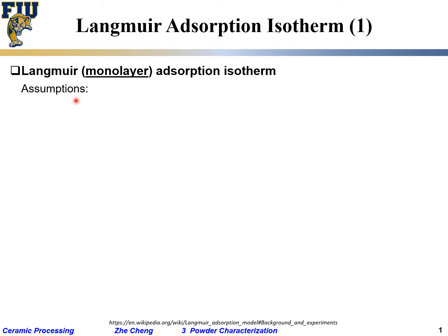To get this model, you have to make assumptions. The first assumption is a simple adsorption reaction — even for adsorption we can write it as a chemical reaction, except S is for a so-called surface vacant site. S is not really a chemical species but a site where gas can come to the surface. You need an empty surface site. Ag is for your adsorbate — g for gas phase — and Aad means the adsorbate is now adsorbed, staying onto the surface.